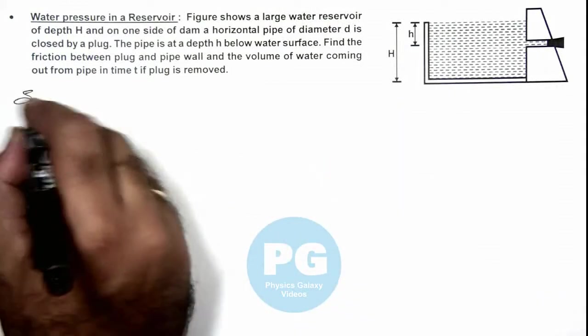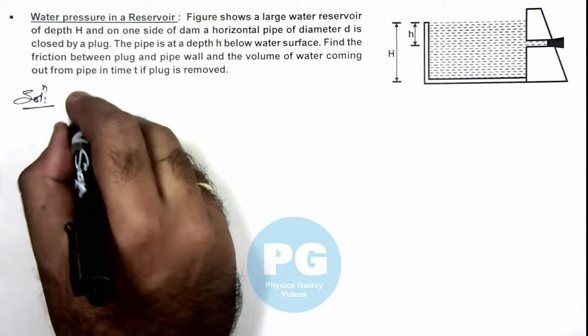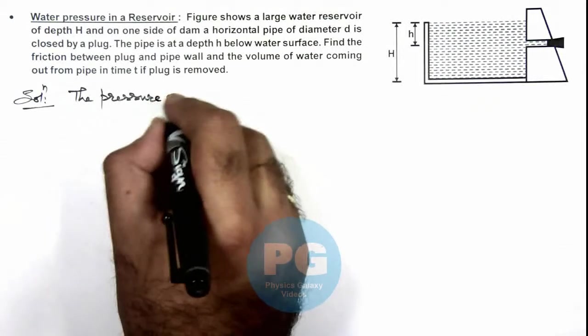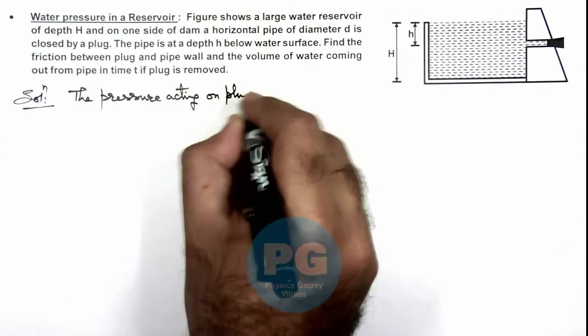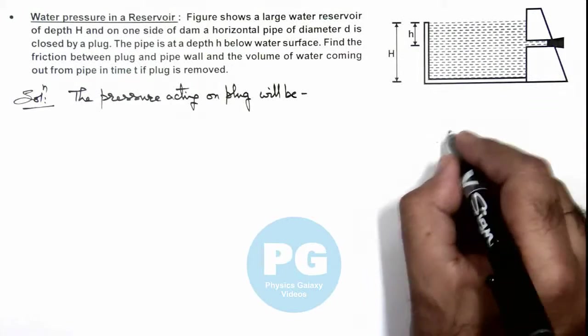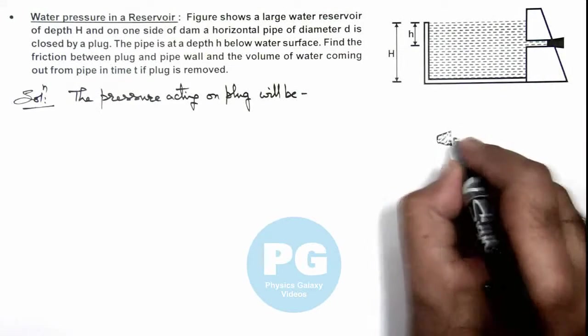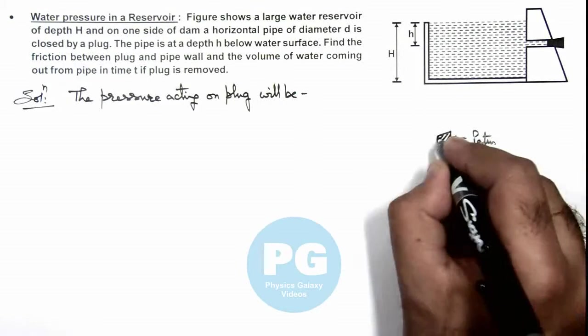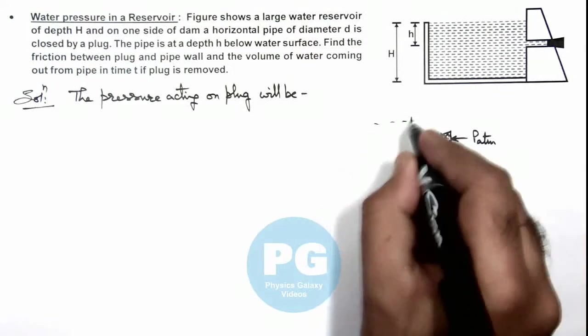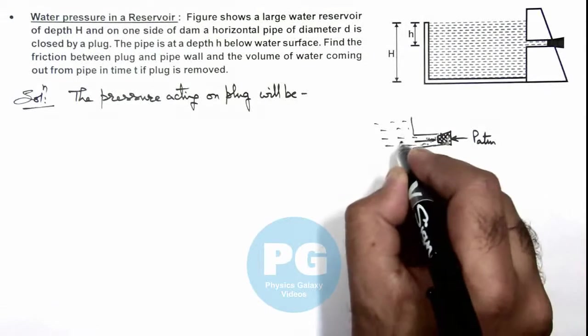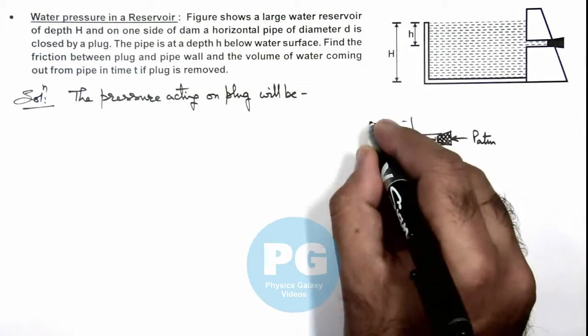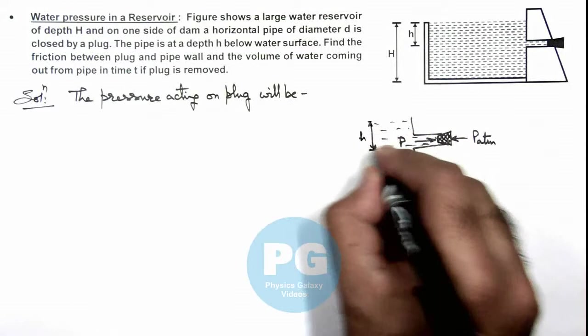Here we can directly write the pressure acting on plug. If this is the plug, then from the right side it is experiencing p atmospheric, and from the left side, in this dam wall where water is filled, the pressure will be p. The value of p will be p atmospheric plus h ρ g, as it is at a depth h below the surface of water in this situation.